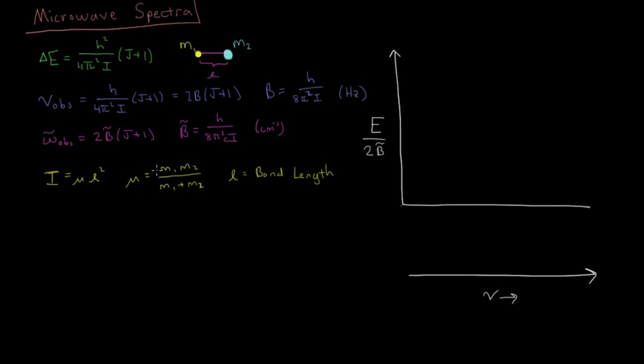And then reduced mass we can remember is just m1 times m2 over m1 plus m2. The product of the constant divided by the sum, where l is, as I said, the bond length.